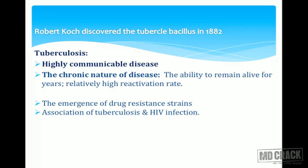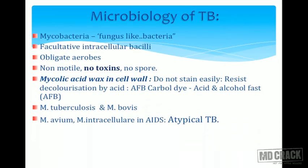Let us look at the microbiology of the tubercle bacillus. It is called mycobacterium because it looks like a fungus — it is a fungus-like bacteria. It is a facultative intracellular bacillus, an obligate aerobe that needs oxygen for its growth. It is non-motile, non-sporing, and produces no toxins. The weapon used by the tubercle bacillus is the thick mycolic acid coat on its cell wall.